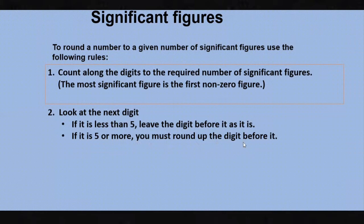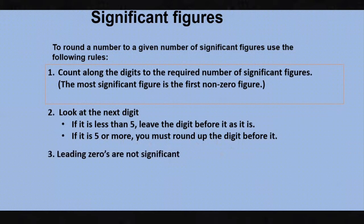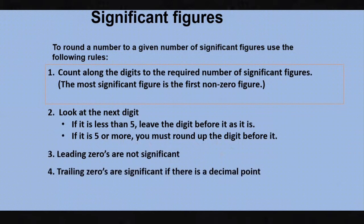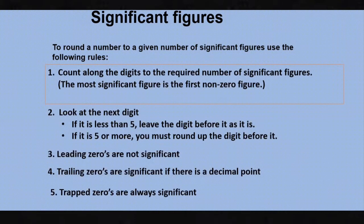If the next digit is five or more, you must round up — that is, add one to the previous digit. Another important rule: leading zeros are not significant, meaning zeros before the number are not significant at all. Trailing zeros are significant only if there is a decimal point. Trapped zeros are always significant. Remember these five points and you will understand significant figures clearly.